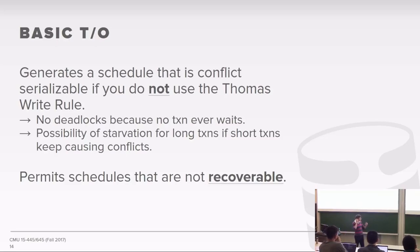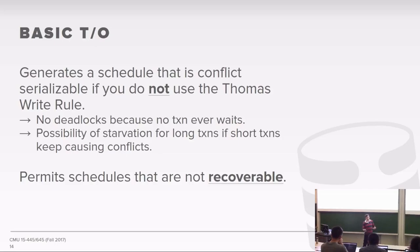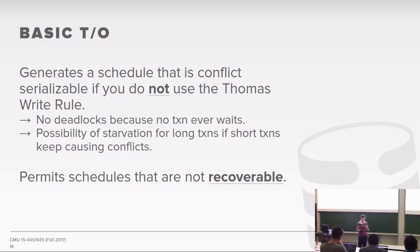The basic timestamp ordering protocol guarantees conflict-serializable schedules as long as you don't use the Thomas Write Rule. A key difference from two-phase locking with deadlock detection is that there can never be deadlock, because no transaction ever waits. It's essentially like wait-die or wound-wait with a timeout of zero — you check whether you can do something, and if not, you abort immediately.